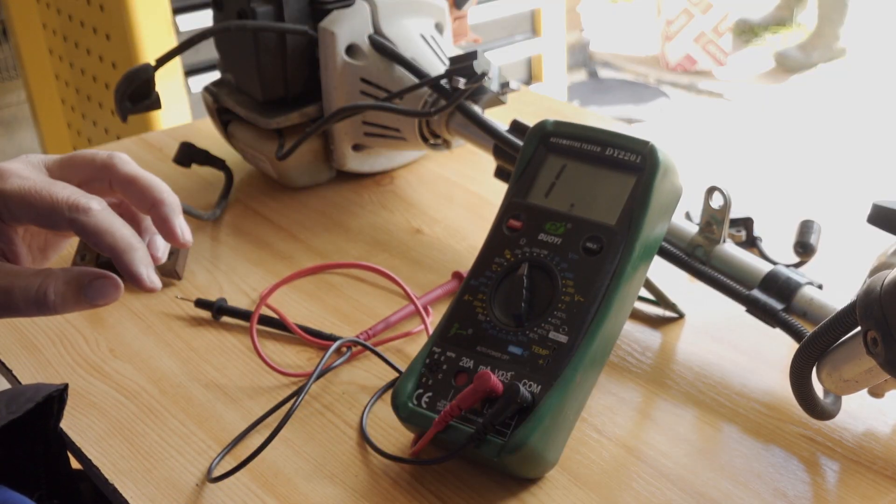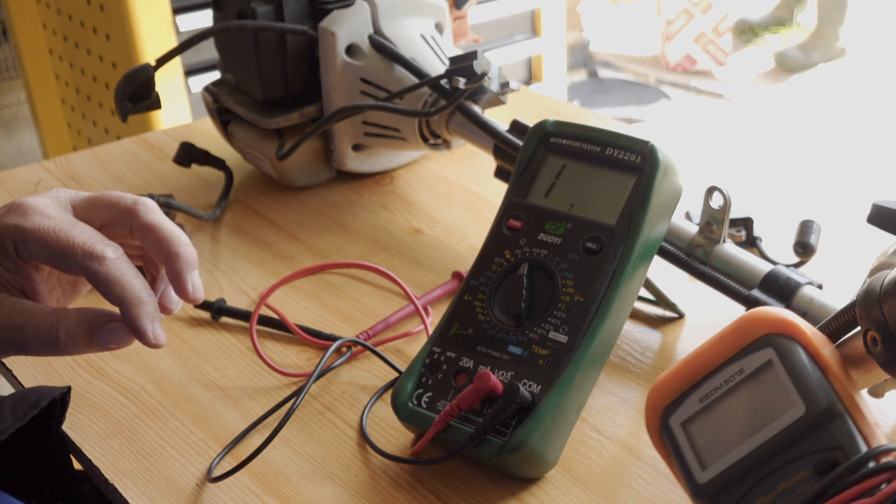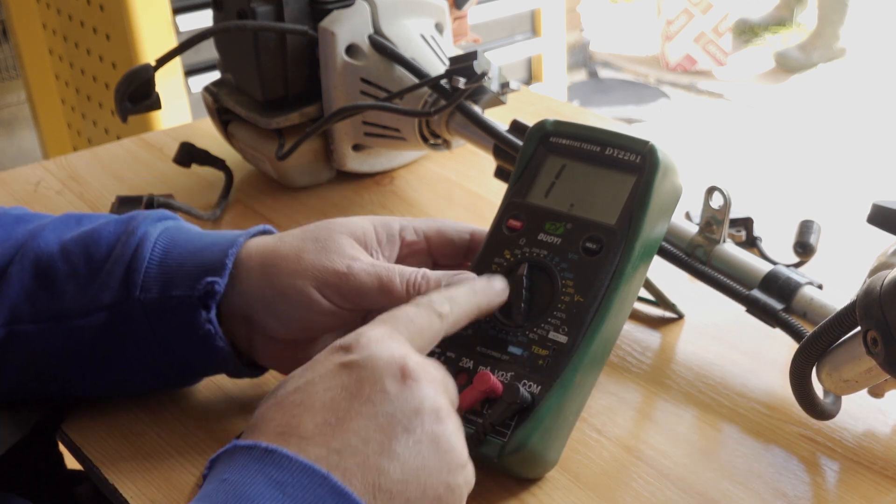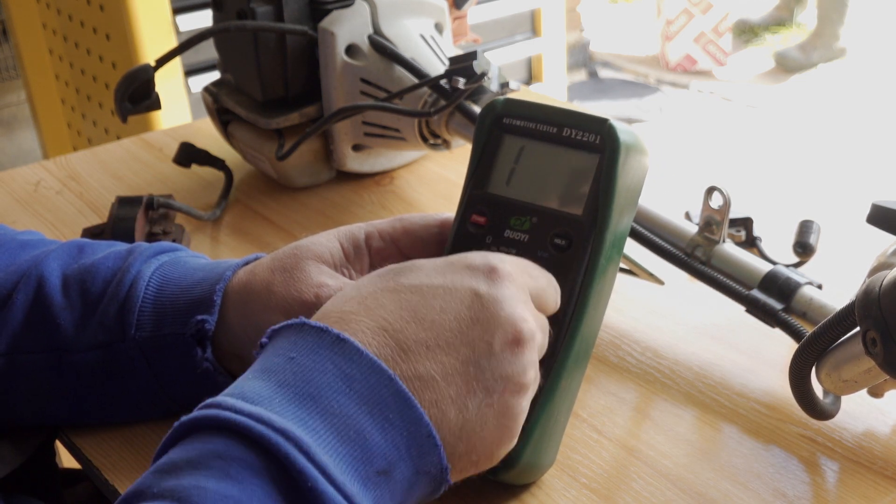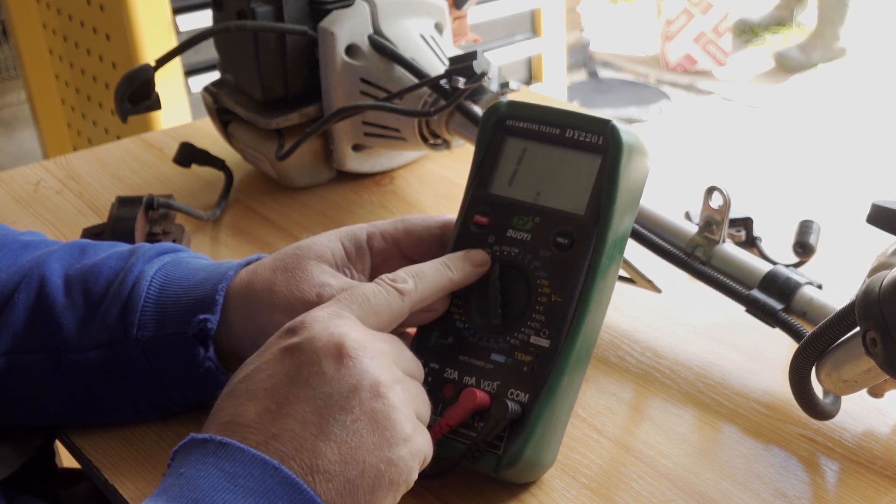So you're going to want a multimeter. I've got two here. This one just does ohms, checks for resistance. This one you can set it. So we've got ohms just here. You can turn it all around. I'm going to switch it onto 20K.